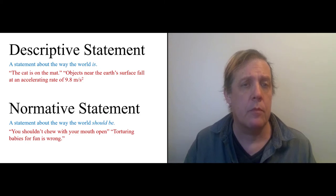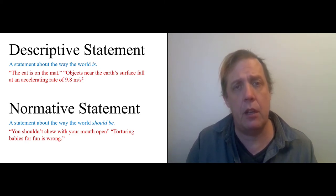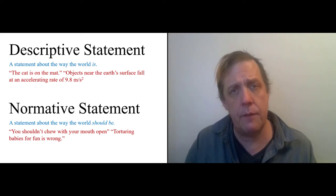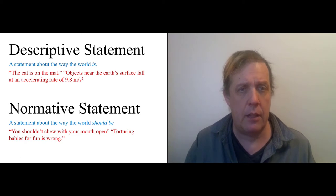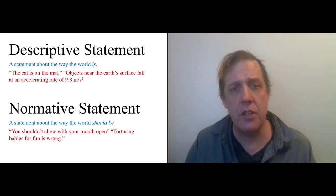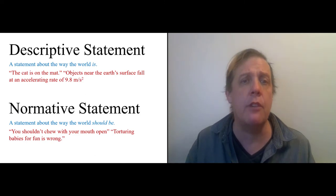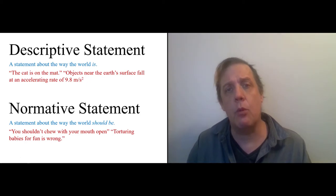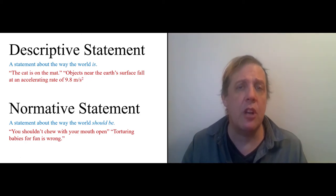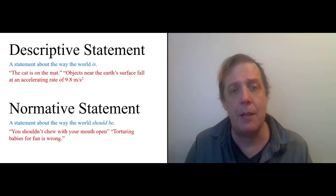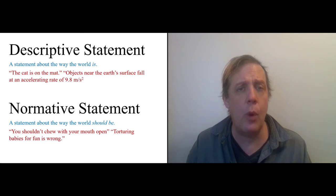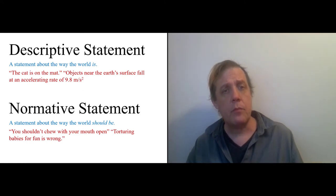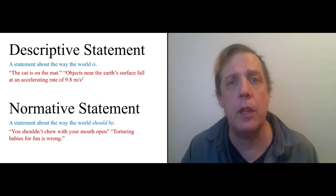And so one important distinction we want to make is a distinction between descriptive statements and normative statements. These are all things that can be true or false, but they are about different things. Descriptive statements are about the way the world is, like the cat is on the mat or objects near the earth's surface fall at an accelerating rate of 9.8 meters per second per second. These are statements about the way the world is. You can also have statements about the way the world should be, like you shouldn't chew with your mouth open, or torturing babies for fun is wrong, or if a baby falls in a well, you should be concerned.